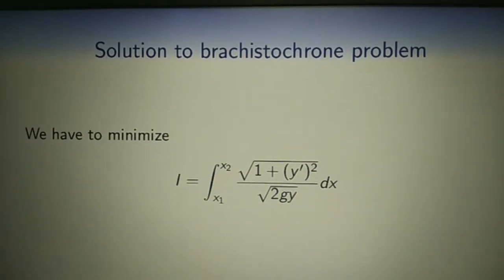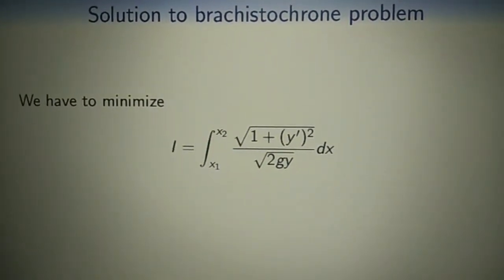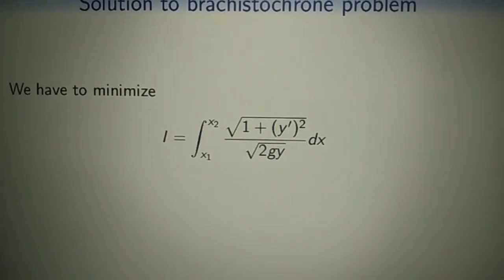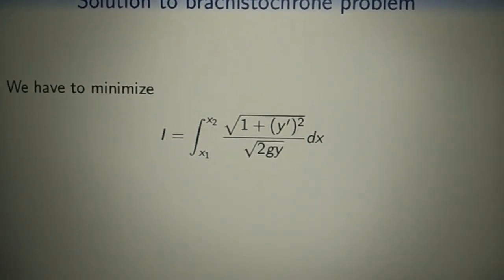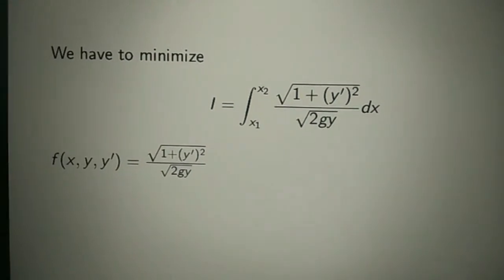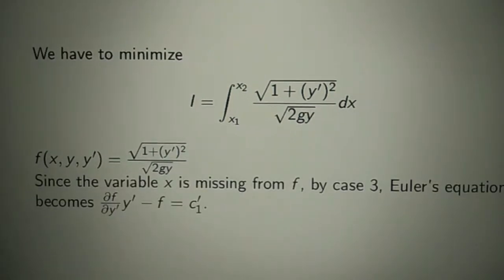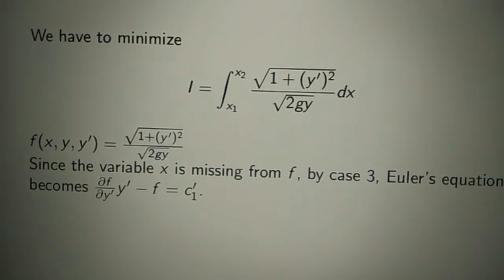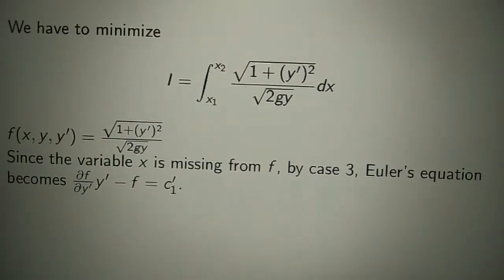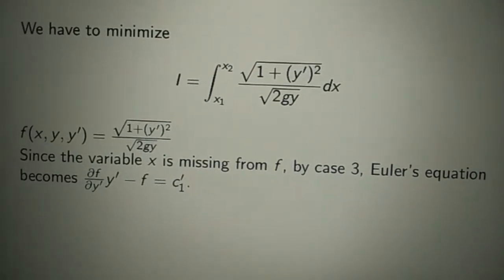Next, we consider the solution to the brachistochrone problem. Here we minimize I equals ∫ from x₁ to x₂ of √(1 + y'²) / √(2gy) dx. Here f(x, y, y') equals √(1 + y'²) / √(2gy). Since the variable x is missing from f, by Case 3, Euler's equation becomes ∂f/∂y' · y' minus f equals a constant c₁.